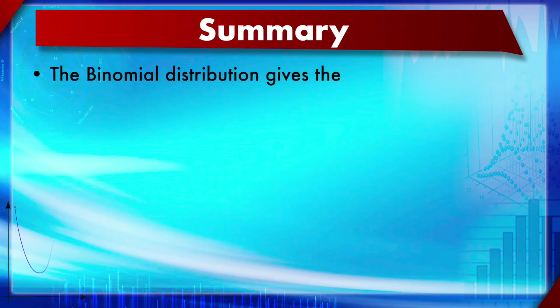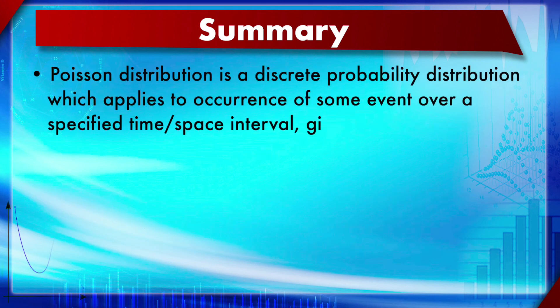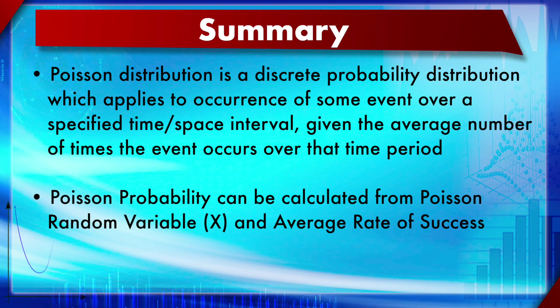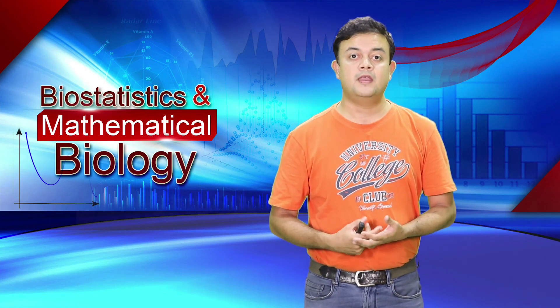In summary: the binomial distribution gives a discrete probability distribution of obtaining exactly x successes out of Bernoulli trials. It is an important distribution in biology, especially for proportions. The exact binomial probability can be calculated from three parameters: probability of success in a single trial, number of trials, and number of successes in n trials. The Poisson distribution is a discrete probability distribution which applies to occurrence of some event over a specified time or space interval, given the average number of times the event occurs. Poisson probability can be calculated from the Poisson random variable x and average rate of success alone. I hope these lectures have been useful - please contribute to the discussion and try to solve the questions. Thank you for watching.